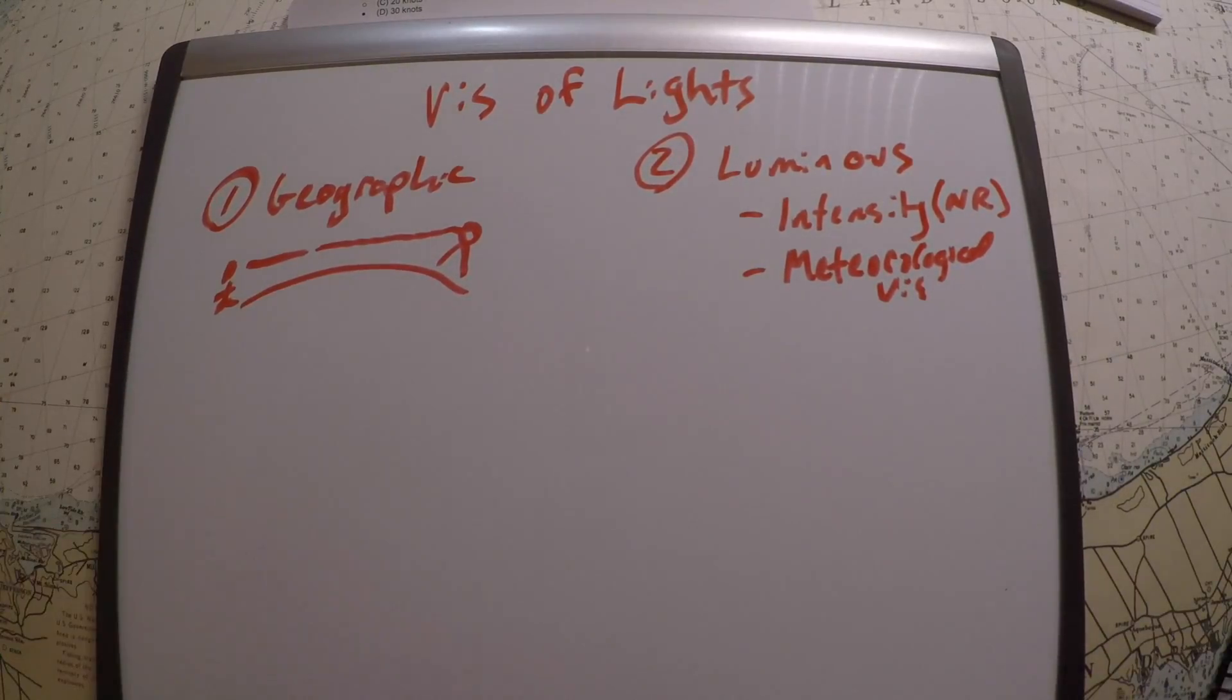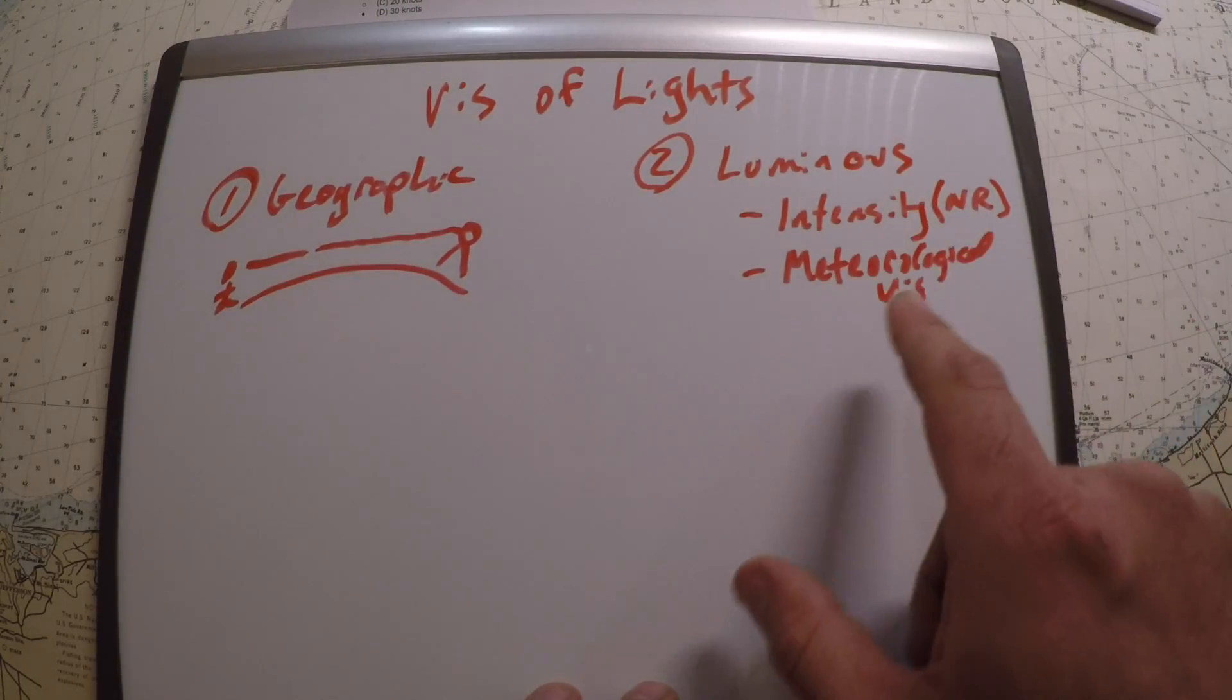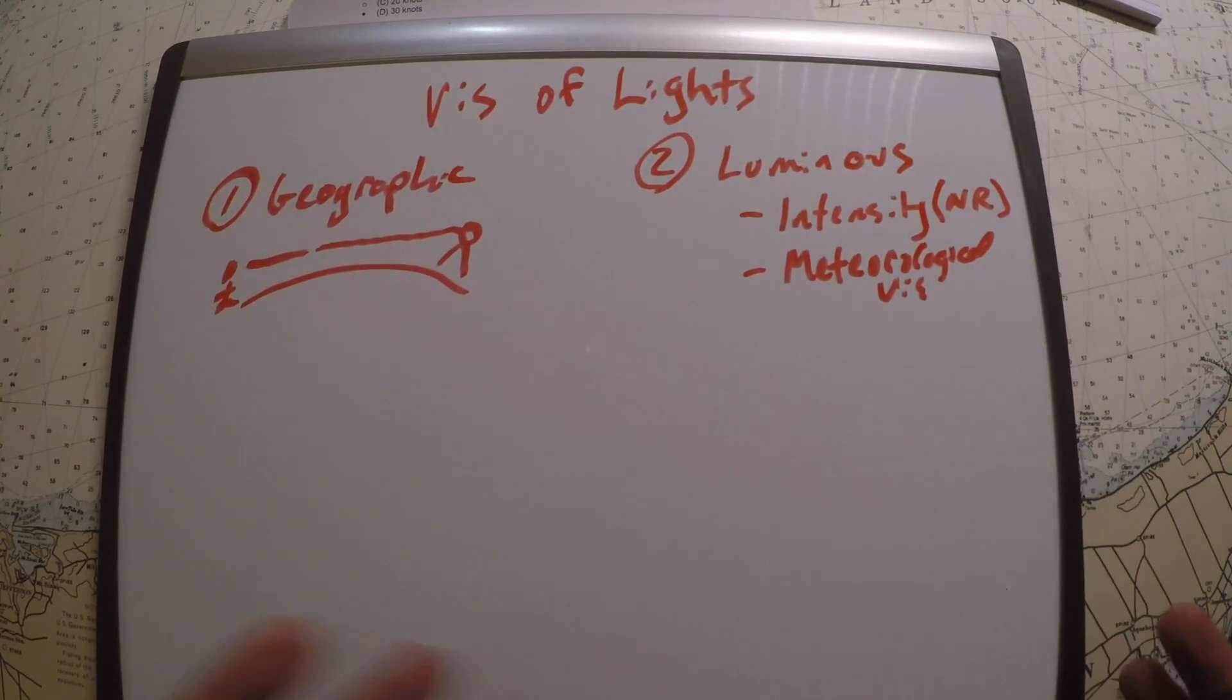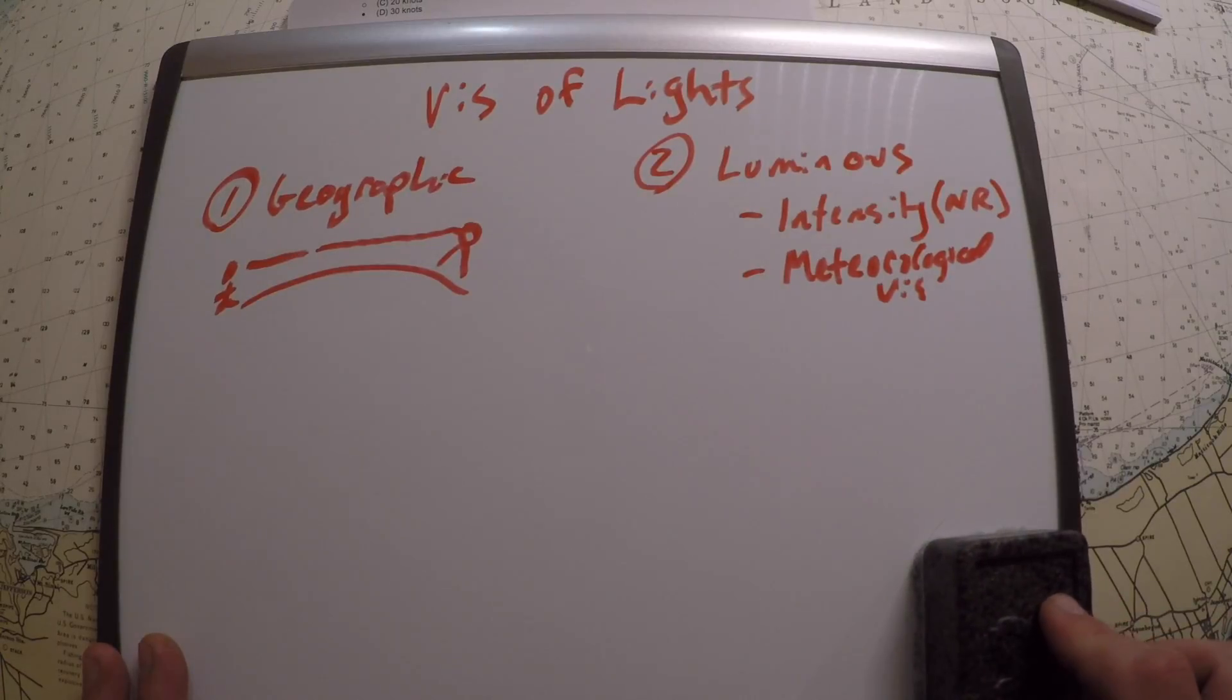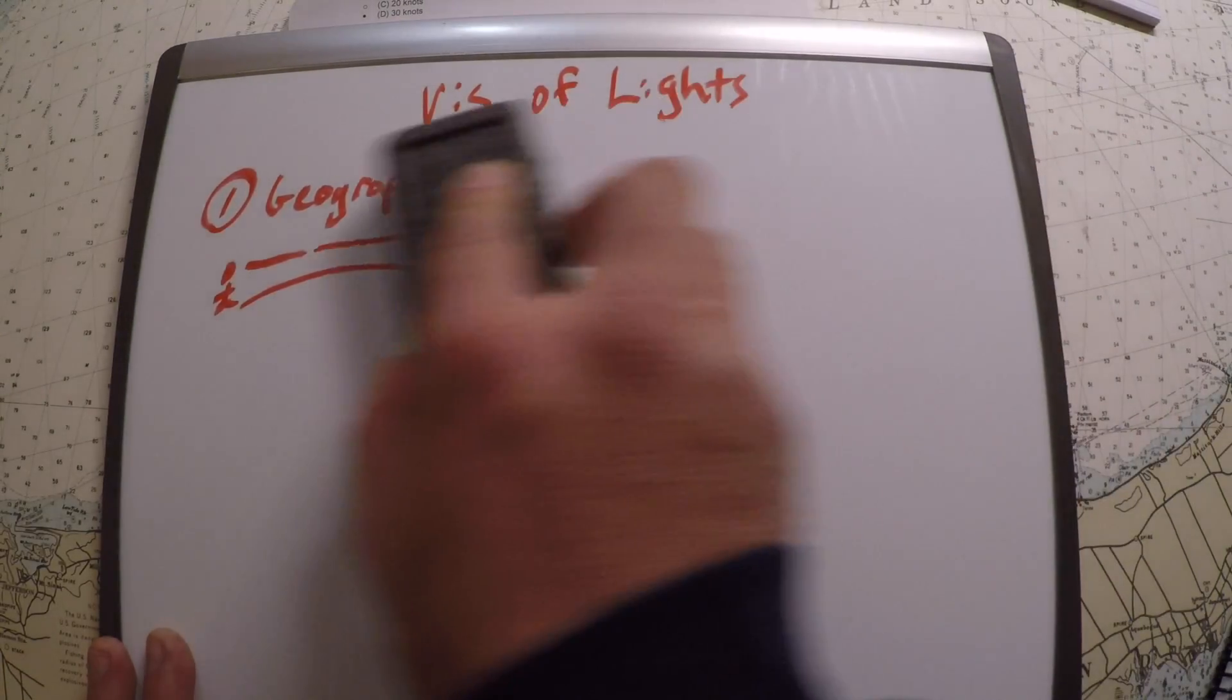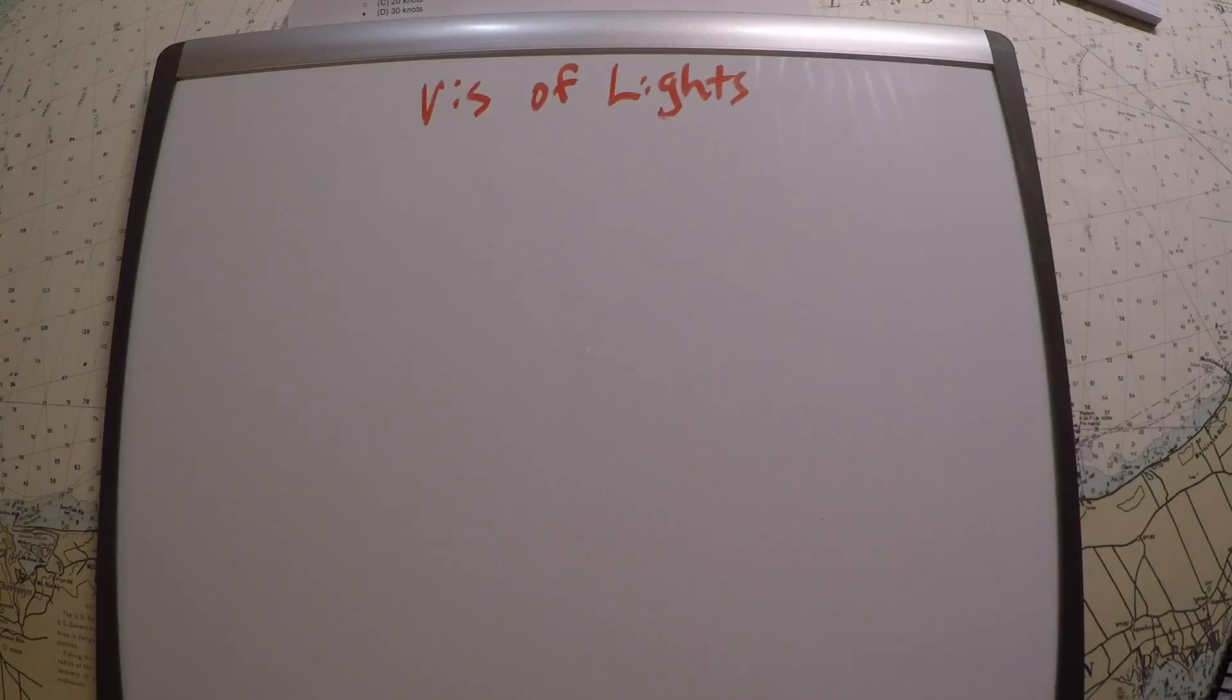For luminous range, think about how the intensity of light interacts with the fogginess or cloudiness or the state of the atmosphere. For instance, on a foggy day you can see headlights from a car because those headlights are really powerful, but if you had a very weak light it wouldn't matter what kind of visibility you have. We need to find both of these, and whichever is less is going to be our answer.